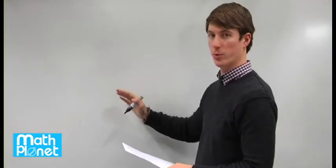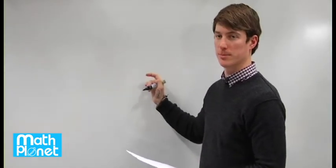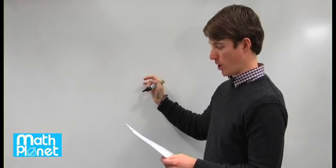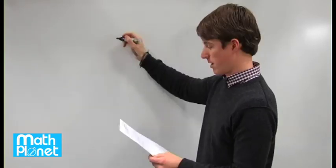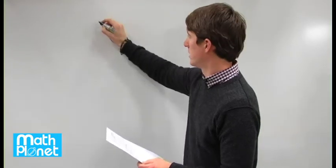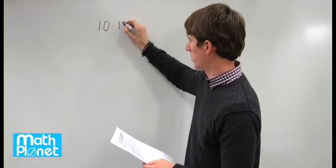For this problem we have 10 different numbers where the average is 130. So we know that the total number of points in the whole system is 10 times 130.